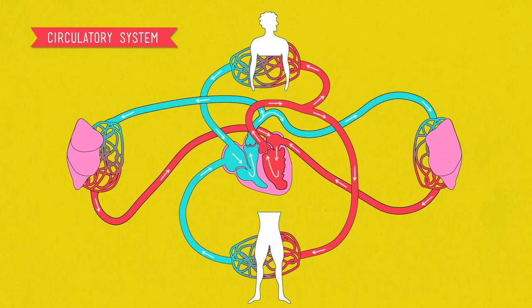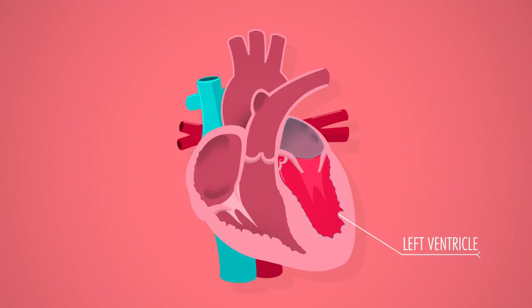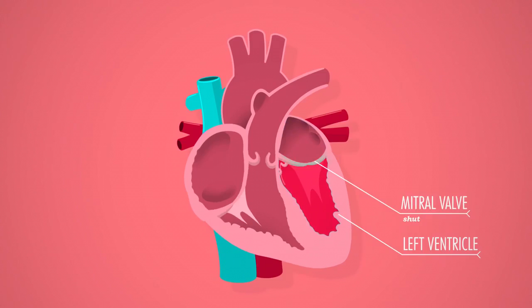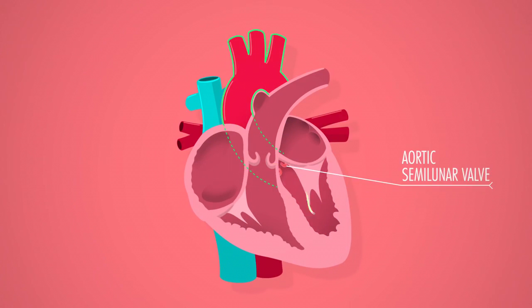An advantage of having a double circulatory system is there is a greater flow of blood to the tissue and muscle blood than you would get with a single circulatory system. It also creates a higher blood pressure. A higher blood pressure is important because it keeps the flow rate even around the body.